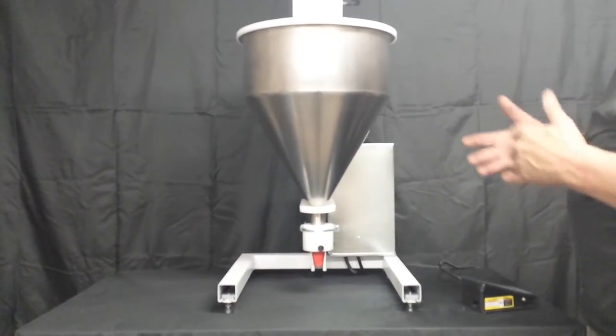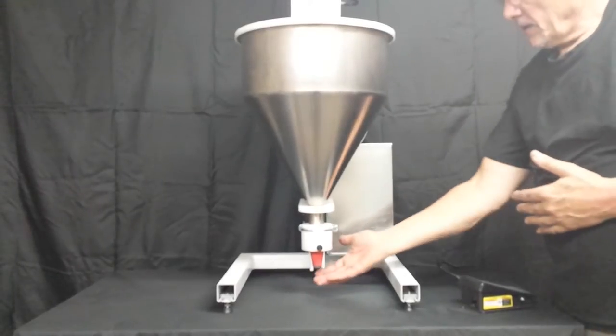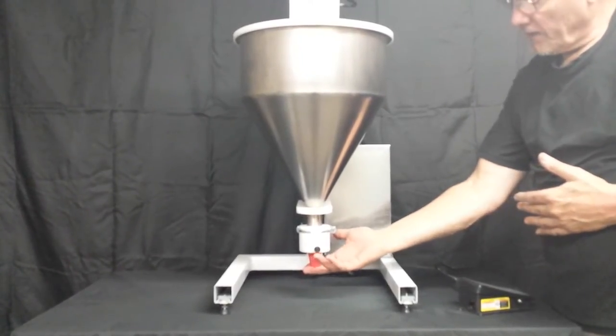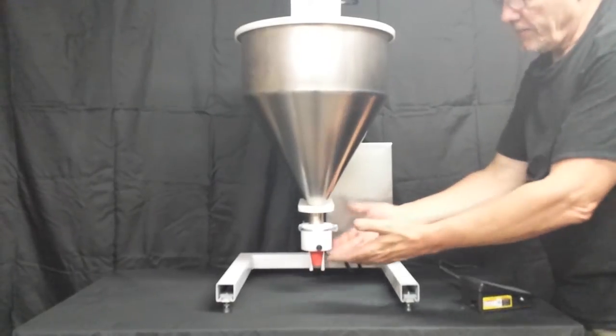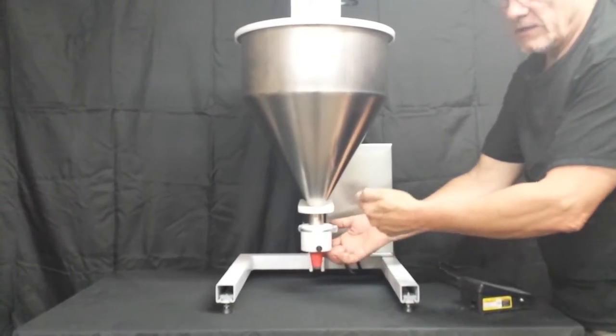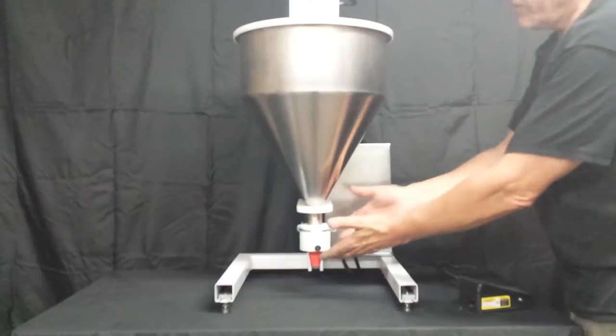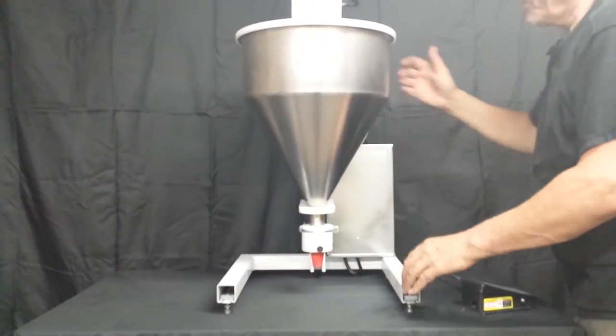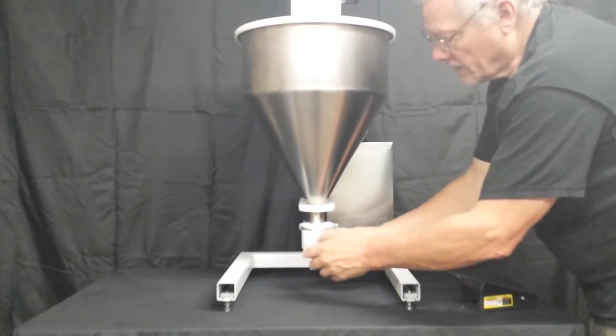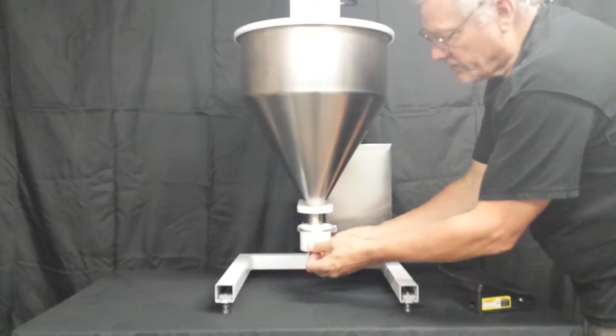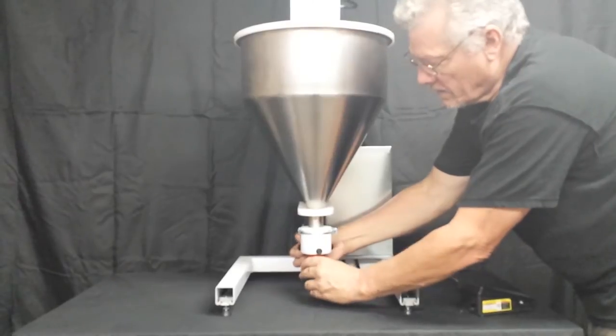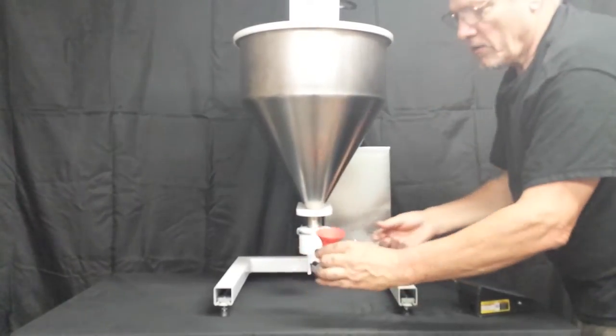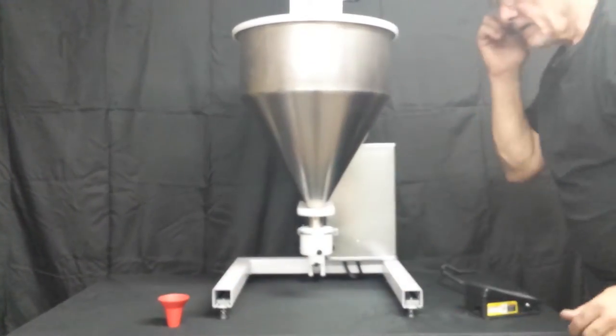First step on the automatic filler to disassemble it is to remove this funnel on the bottom. The reason you have to remove the funnel, and I'll tip it up and show you in a second, is there is a spinner plate under there that has to be removed in order for us to open this up. So the first step is to take all these screws loose. There's three of them. Pull this funnel off, set it aside.